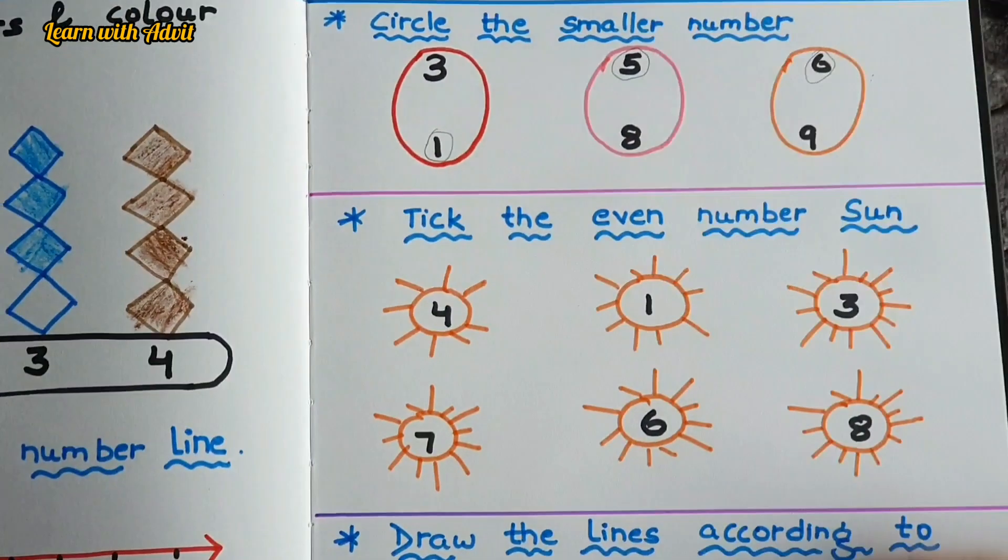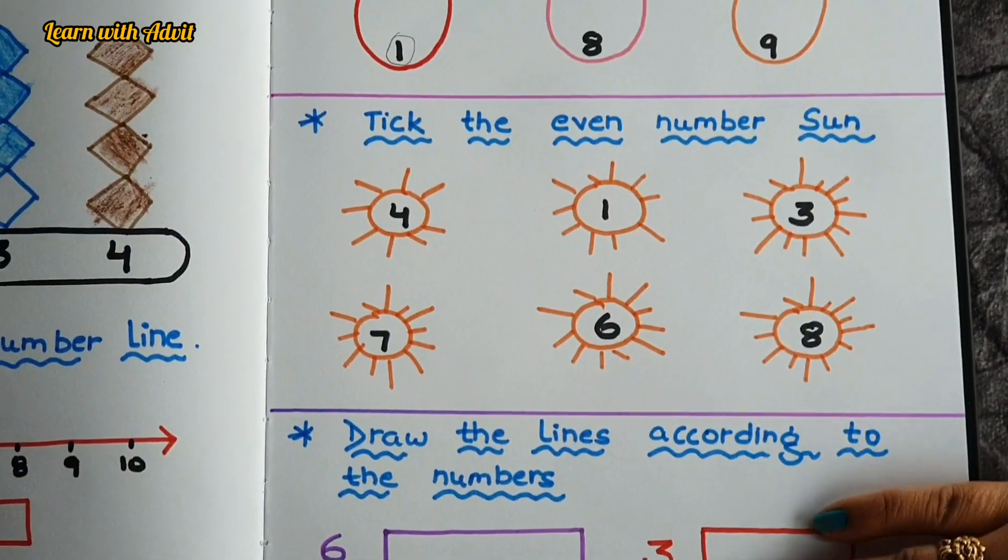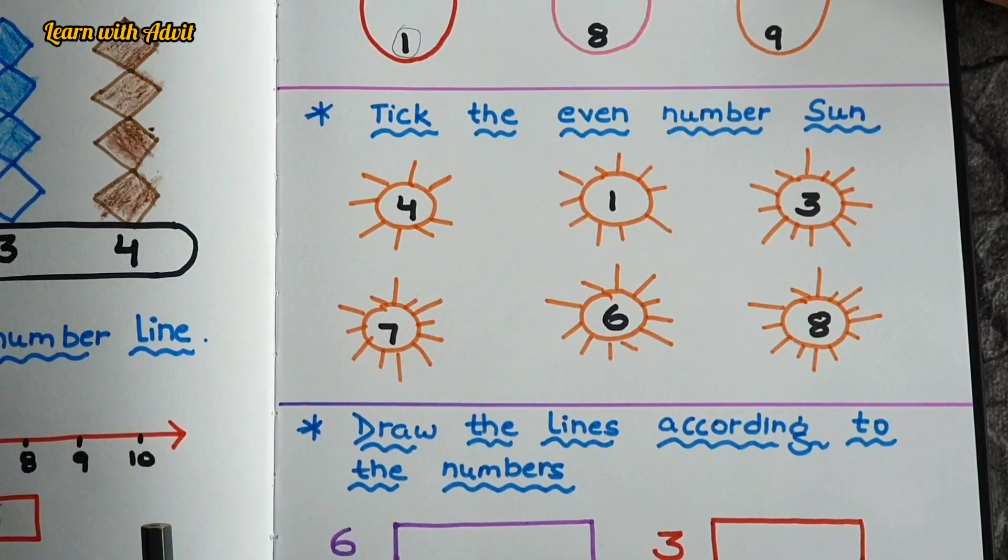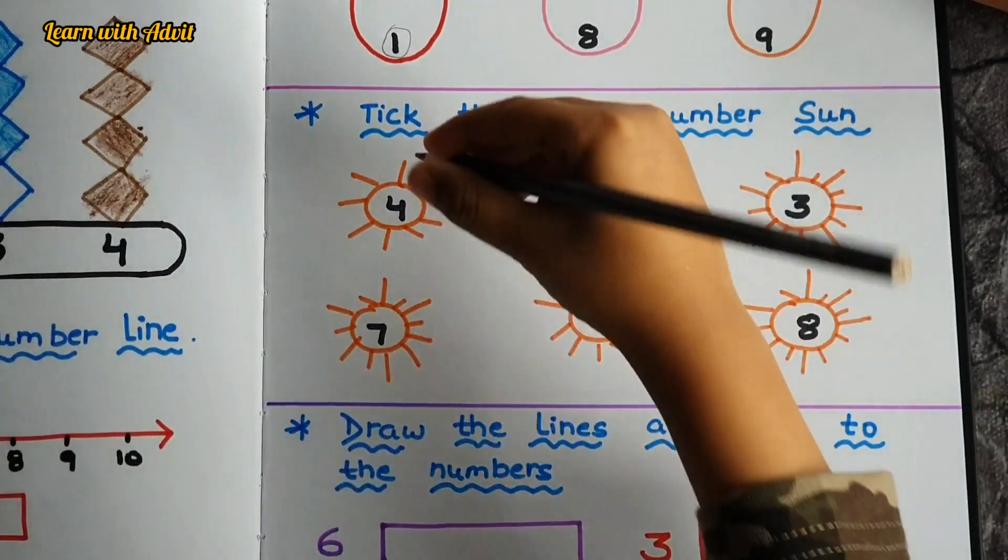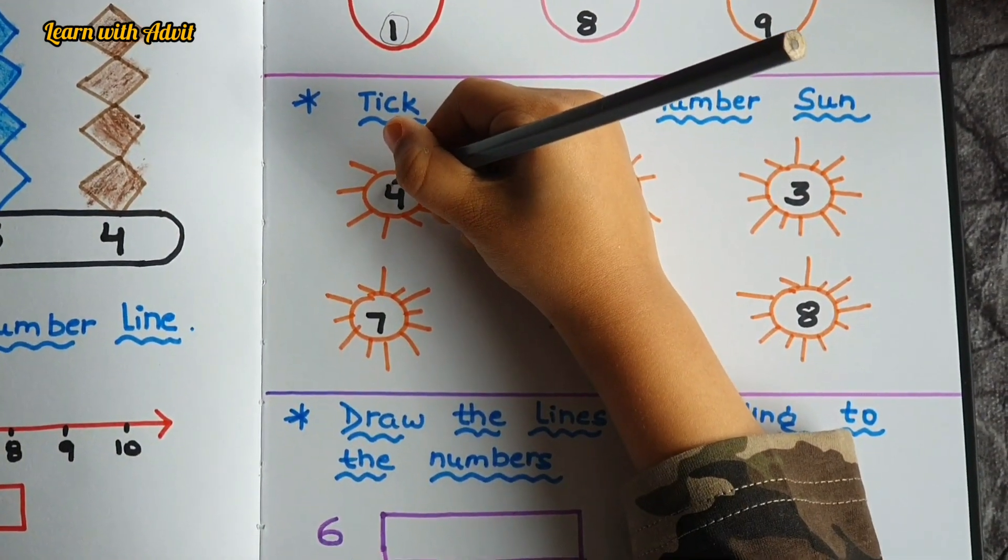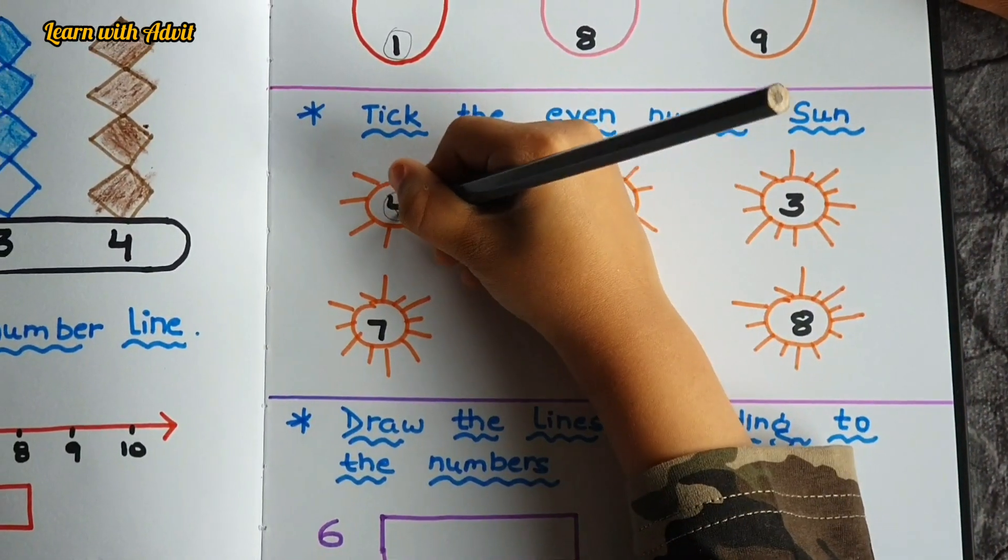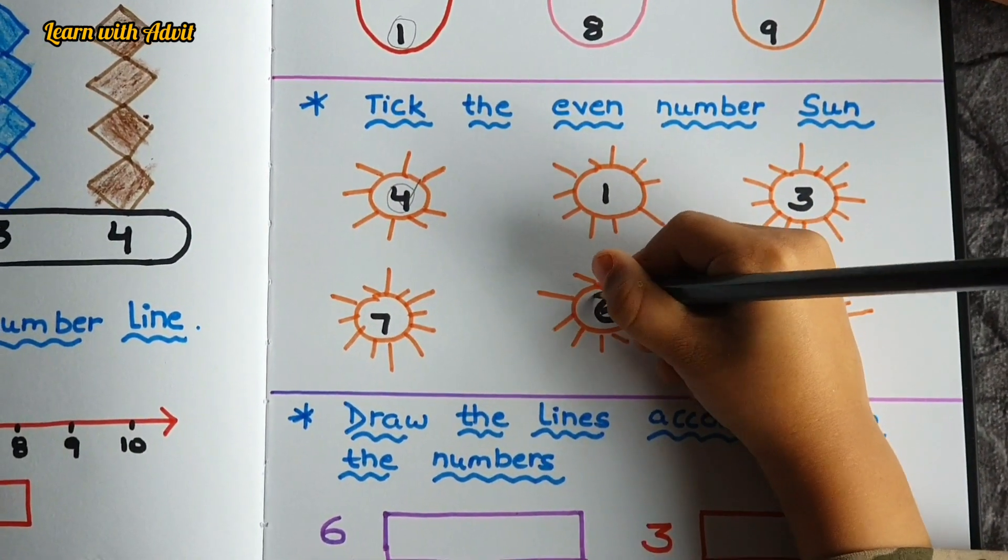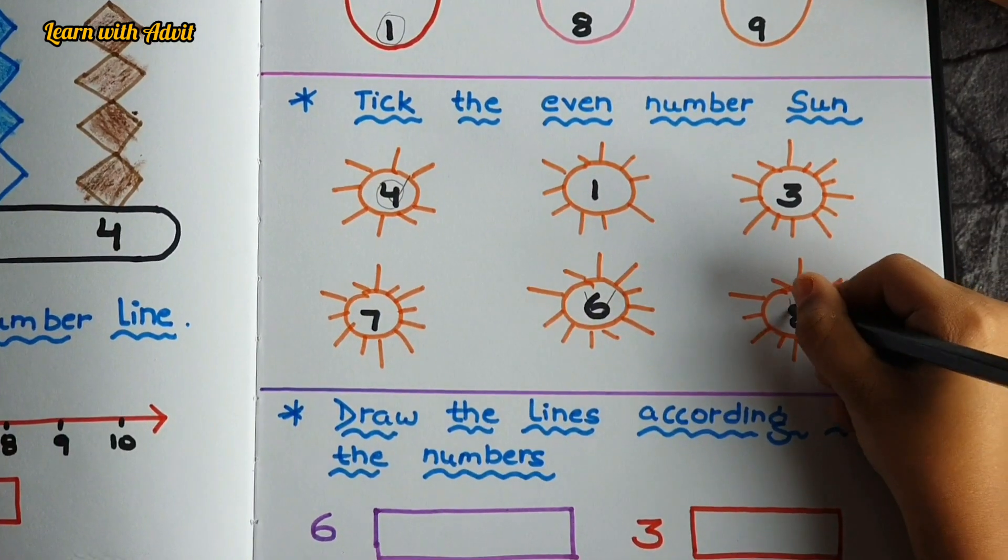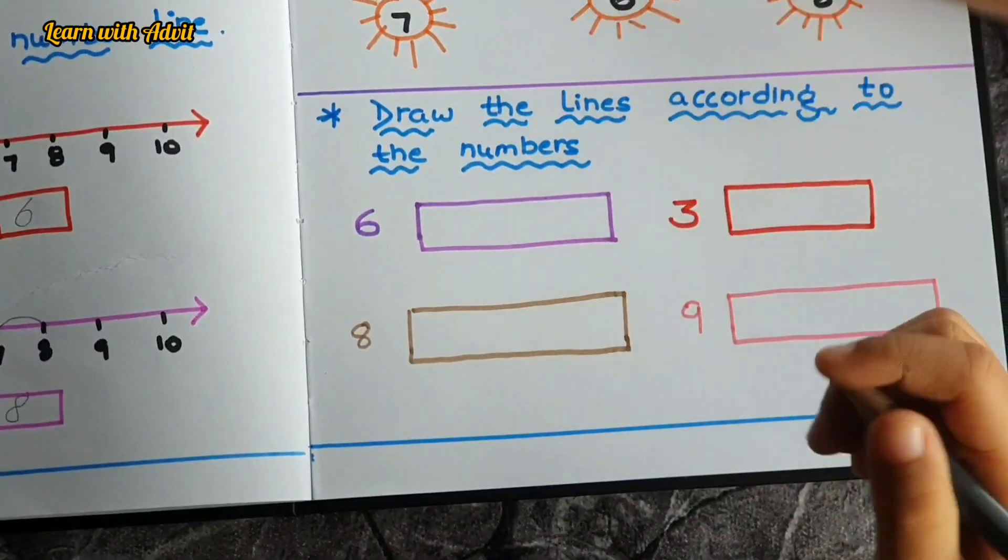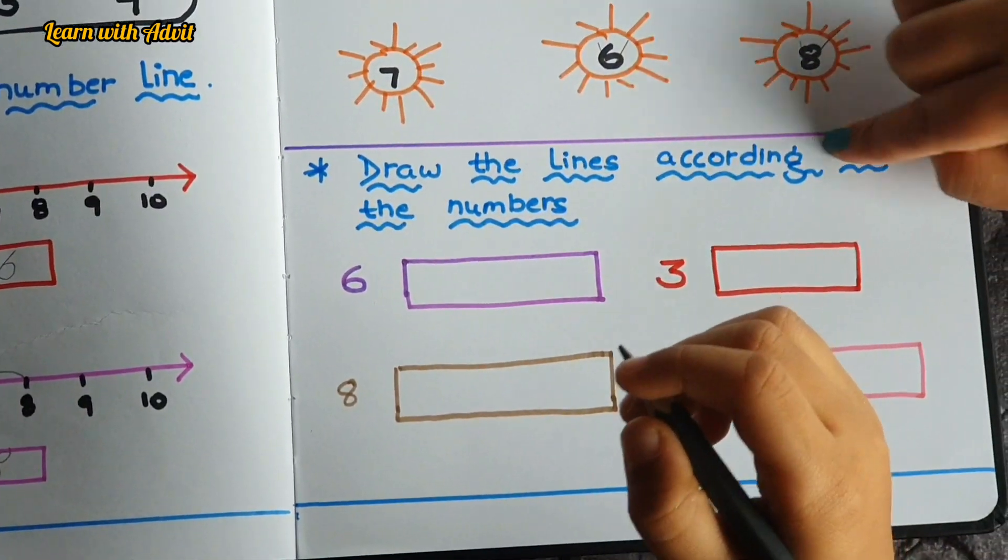So you know even and odd number, right? So tick the even numbers. Even number only—is 4? You have to tick. Yeah. And 6, and 8. Very good, are even numbers.